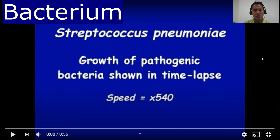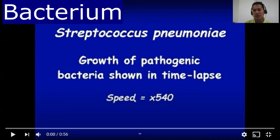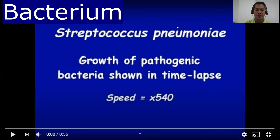This is Streptococcus huminae. In this video I'm going to be showing you how this bacteria grows and reproduces through binary fission. As you can see, this is in time-lapse — the speed is times 540. Streptococcus huminae is the type of bacterium that can cause pneumonia.